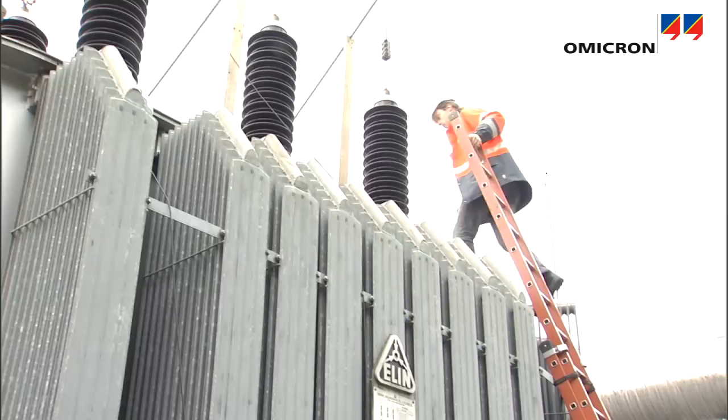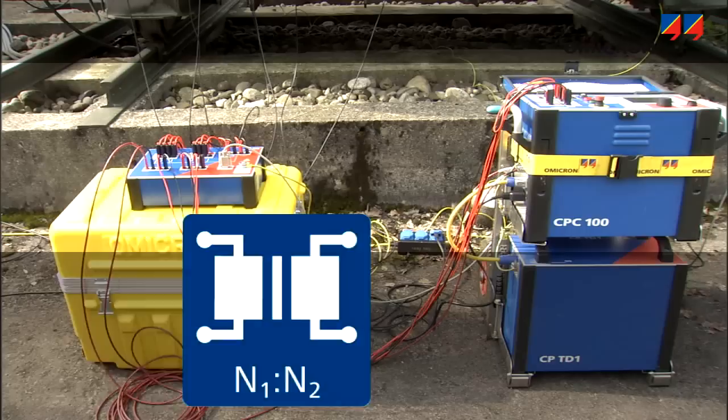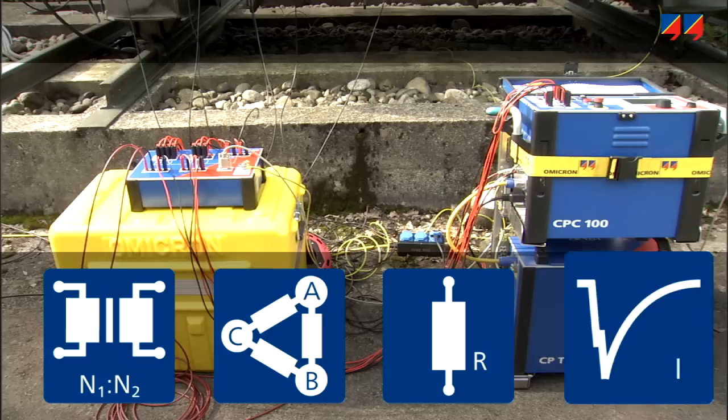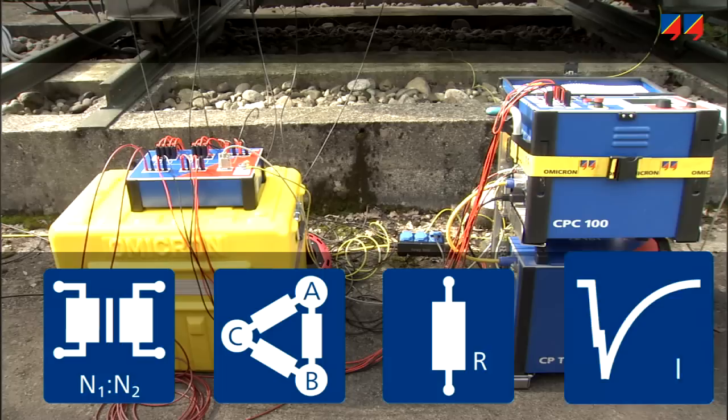Using the CPSB1 switchbox accessory, the CPC can automatically measure the ratio and magnetization current of all taps of all windings, confirm the vector group, and measure static and dynamic winding resistance for all taps of all windings.